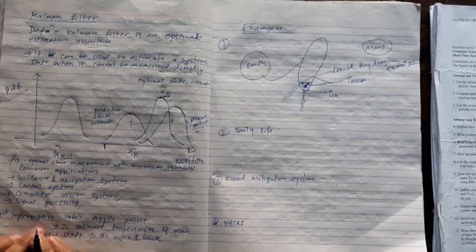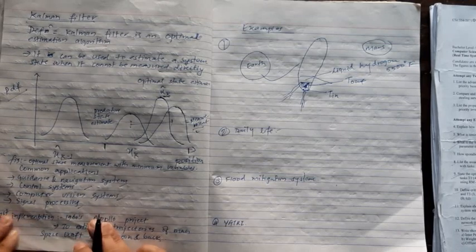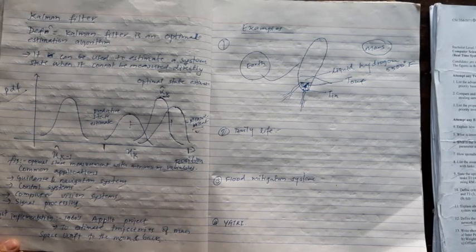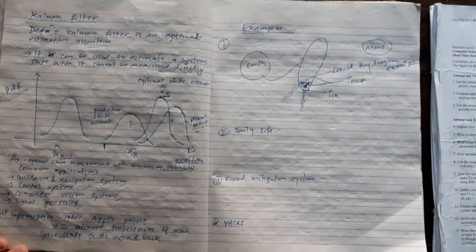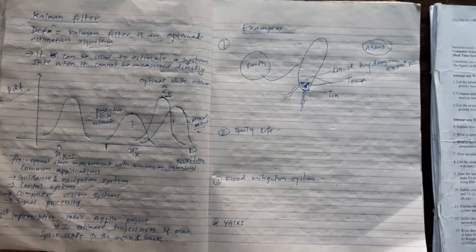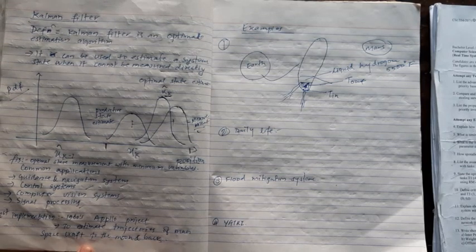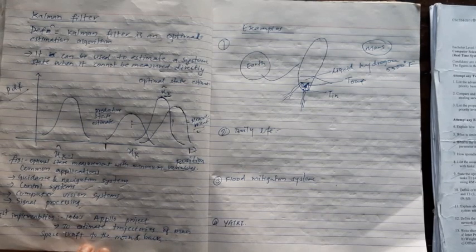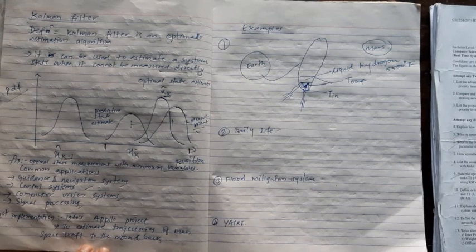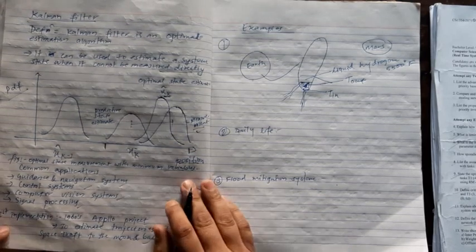Interestingly, the first successful implementation was in the Apollo 11 project in 1960. The model was used in the main spacecraft, which was an uncertain process.